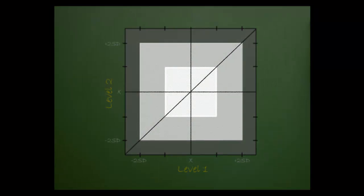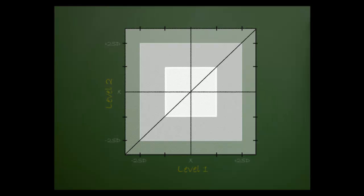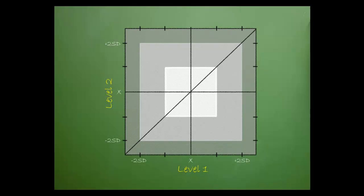The light gray square will display points that are between one and two standard deviations from the mean for both levels. The dark gray square will display points that are between 2 and 3 standard deviations from the mean for both levels.